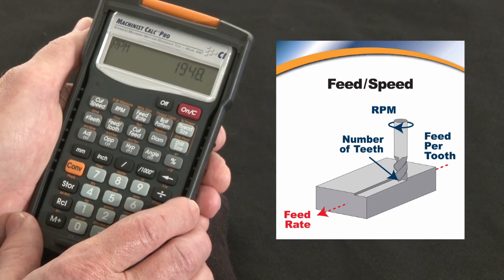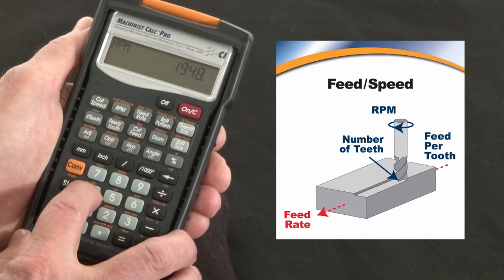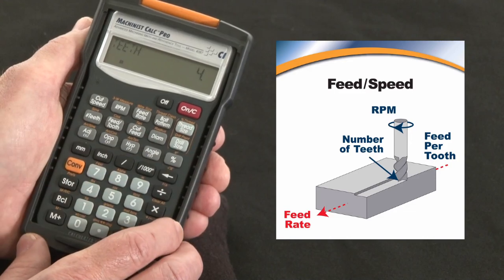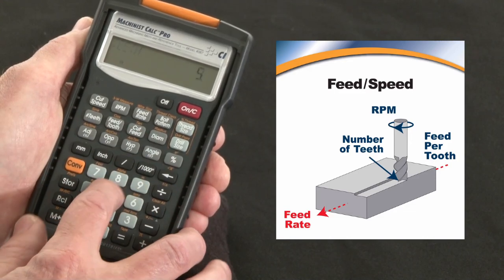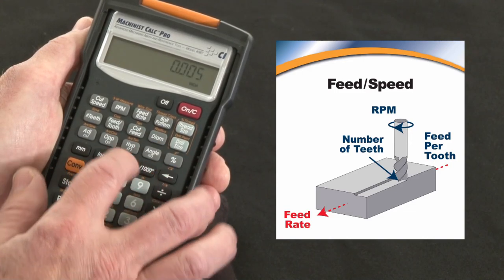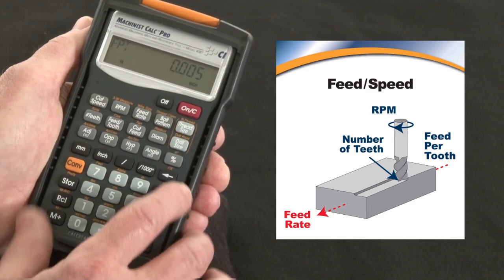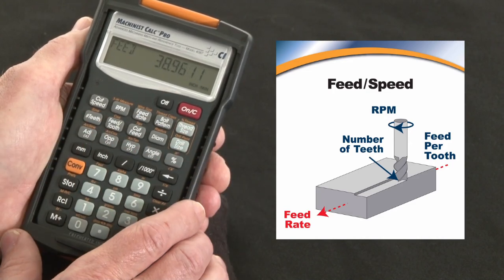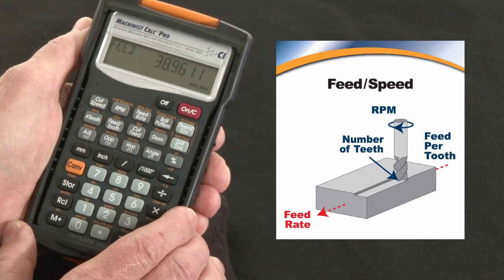Now let's figure our feed rate. Say this is a four-tooth tool. So let me hit four, number of teeth. And the chip load, let's go with five thousandths using our speed entry key. That's our feed per tooth. Now I just hit feed rate and we can run this at about 39 inches per minute.